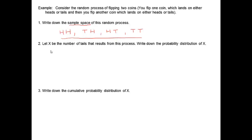Let's now define a random variable X that is the number of tails that results from this random process. So it's a mapping between the random process and some numerical values.